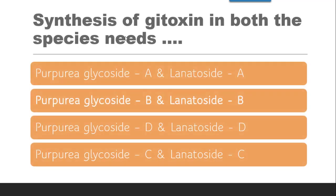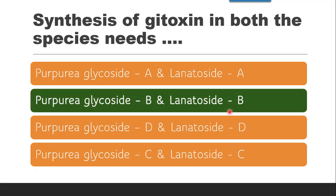The next question is: synthesis of gitoxin in both species needs which precursors? Digitoxin and gitoxin are common to both purpurea and lanata; only digoxin is additional in lanata. For gitoxin, since it is in the second position, both species need the B-series precursors: purpurea glycoside B and lanatoside B. The correct answer is purpurea glycoside B and lanatoside B.